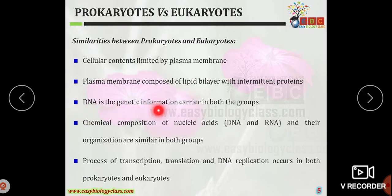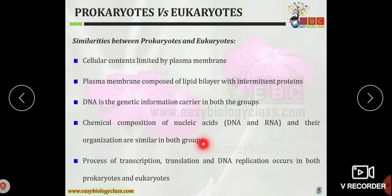DNA is a genetic material and information carrier in both groups. The chemical composition of nucleic acids DNA and RNA, and their organization including the presence of nucleotides, is similar in both groups. The processes of transcription (formation of mRNA from DNA), translation (formation of proteins from mRNA), and DNA replication (formation of an exact copy of DNA) are the same in both cells.